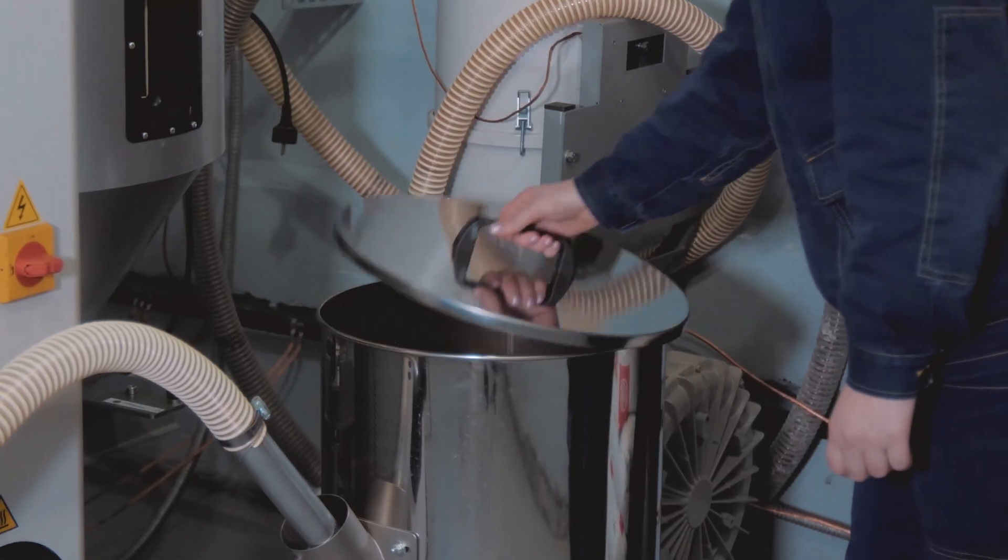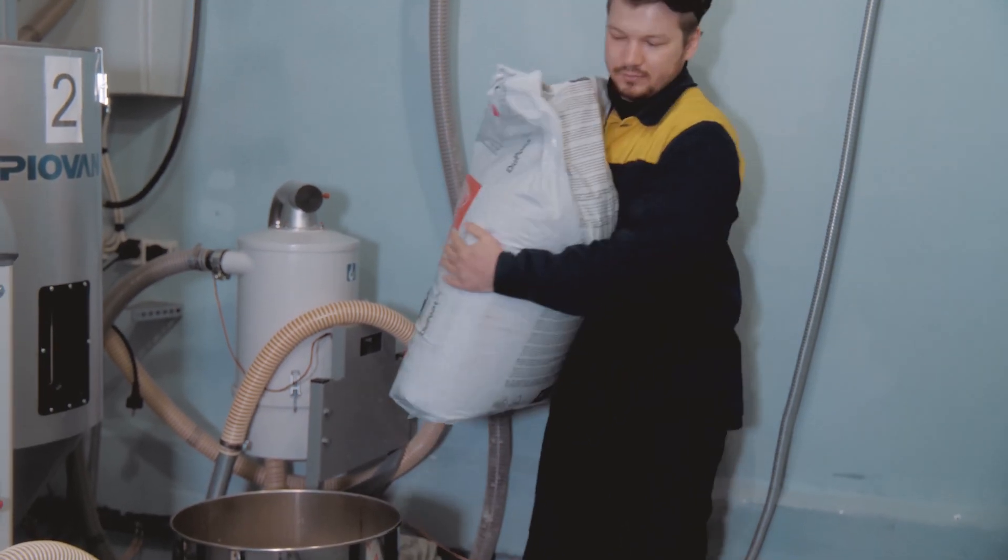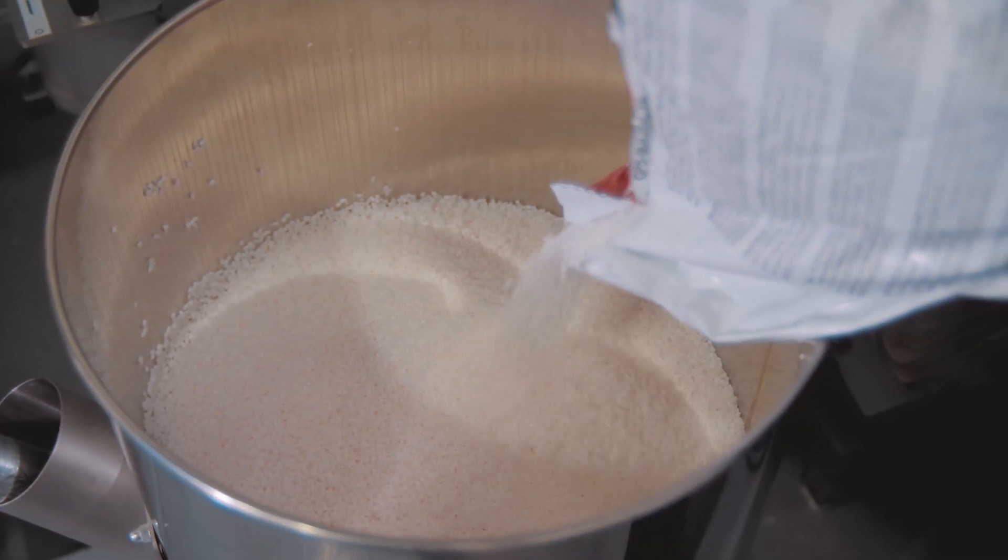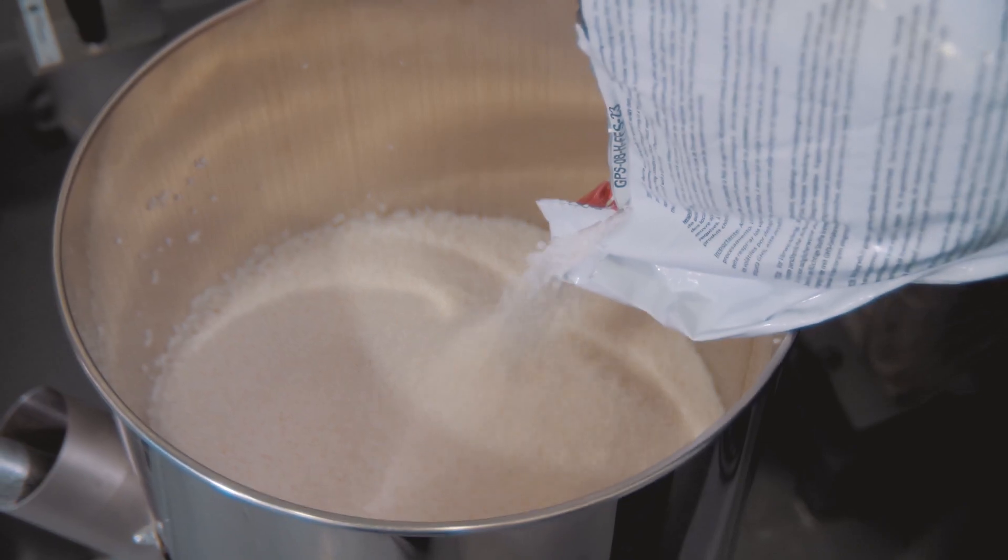Semi-finished detonating cord goes through the drying stage, after which it is subjected to core moisture control and diameter control.